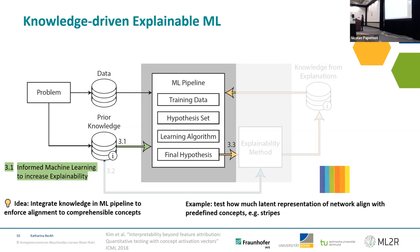For the first approach — informed machine learning to increase explainability — this is largely covered by the informed machine learning framework already. The idea is that you integrate knowledge into the pipeline to enforce an alignment of comprehensive concepts, achieving an interpretable component in the model. One example is testing how much the latent representation of a network aligns with predefined concepts, such as a set of stripes — finding out whether the system has learned that understanding.